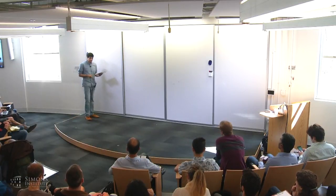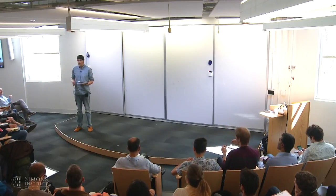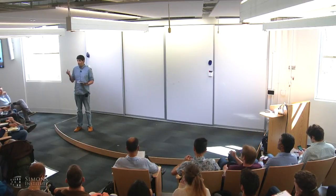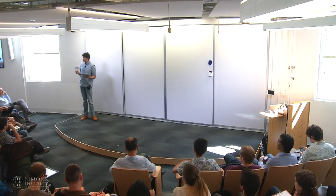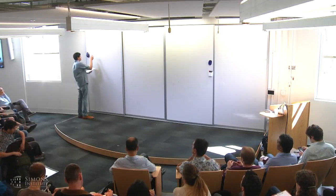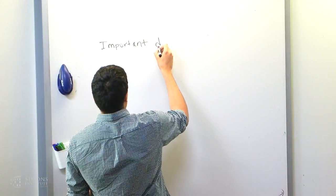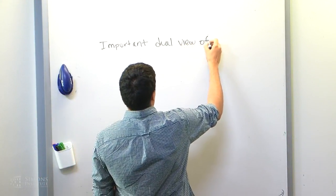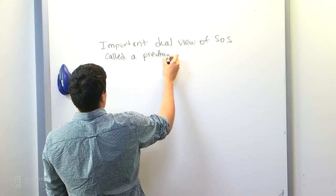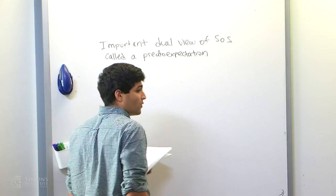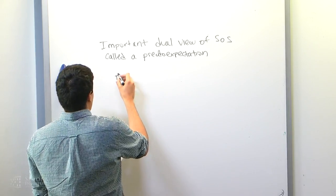The first thing I want to do is introduce a complementary view to what Pablo introduced in the first two parts of this tutorial. There's another way to think about SOS which is actually very useful for both rounding SOS and getting algorithms out of it — something really interesting that all sorts of people are working on — and even how to prove lower bounds for things like planted clique. Let me introduce this dual view of SOS, which is called a pseudo-expectation.